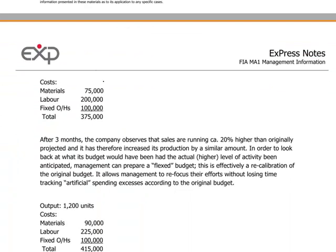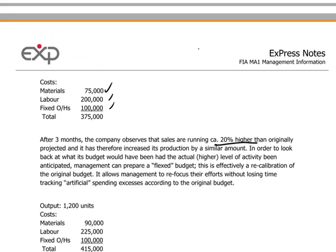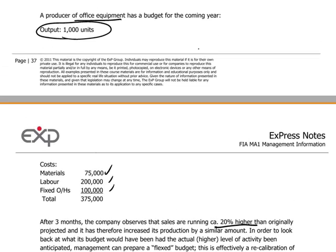And here are the costs: materials, labor, and fixed overheads — a very simple cost calculation. What do you suppose the company would do if after three months they see that sales are running 20% higher than originally projected? In other words, instead of working at a level of 1,000 units, we're really talking about 1,200 units.